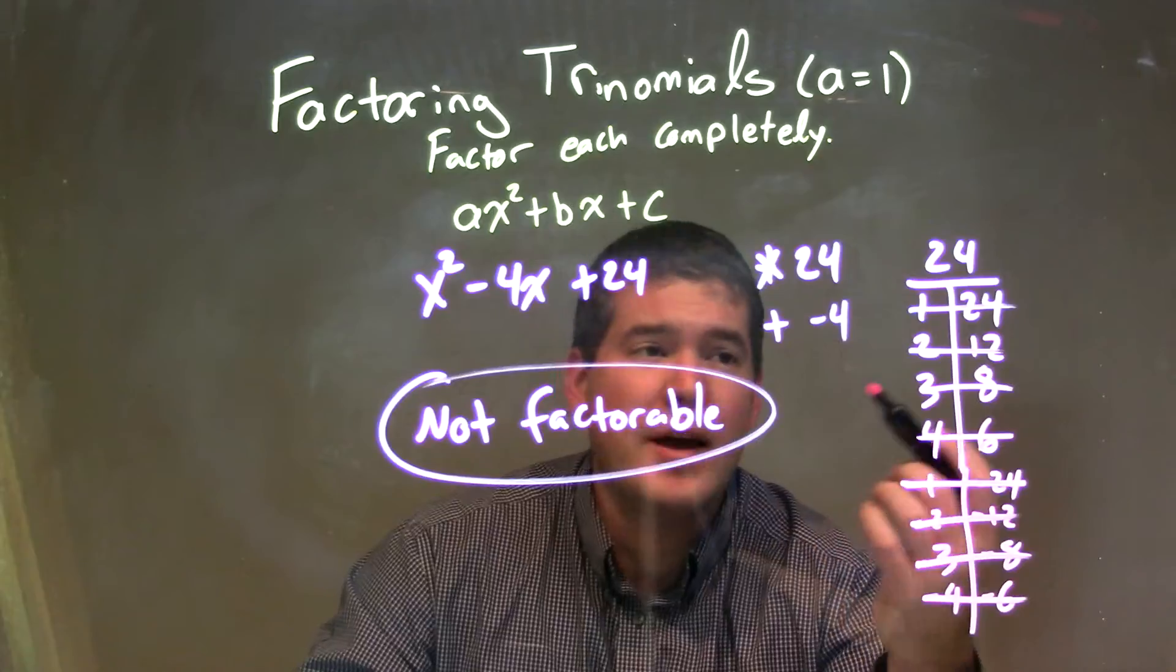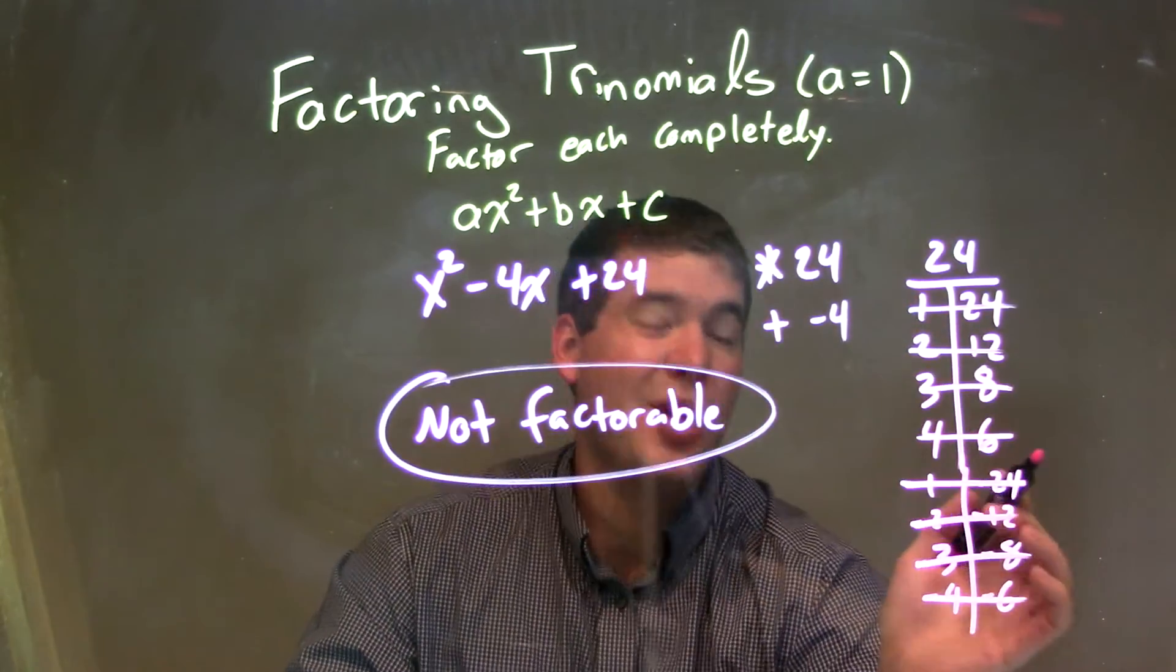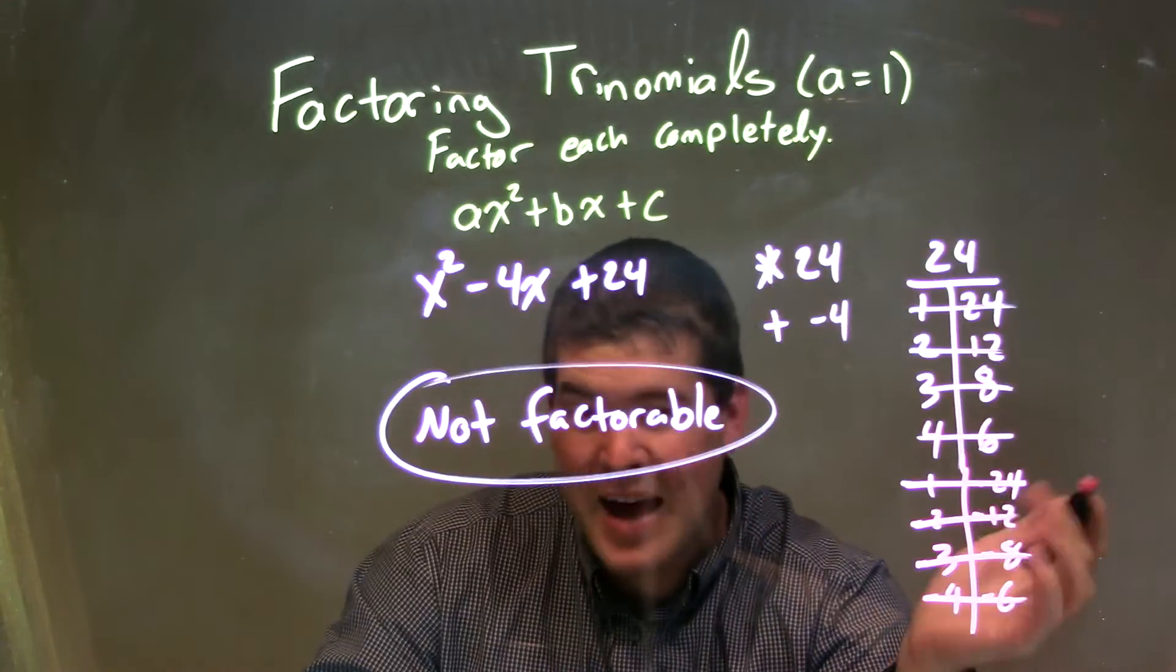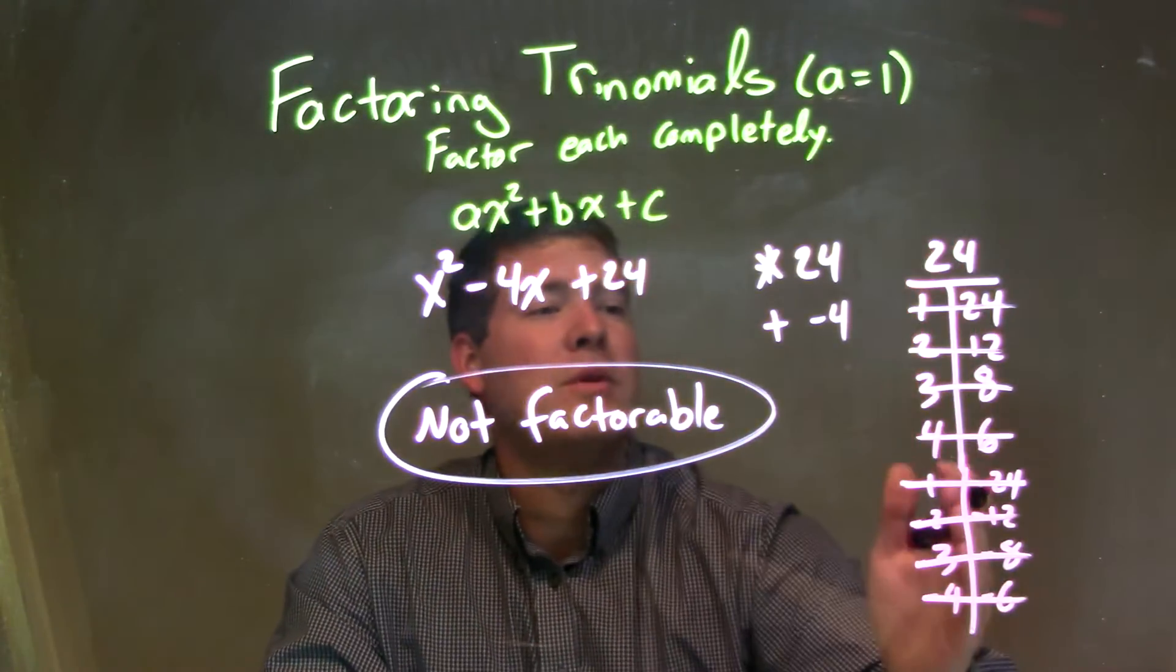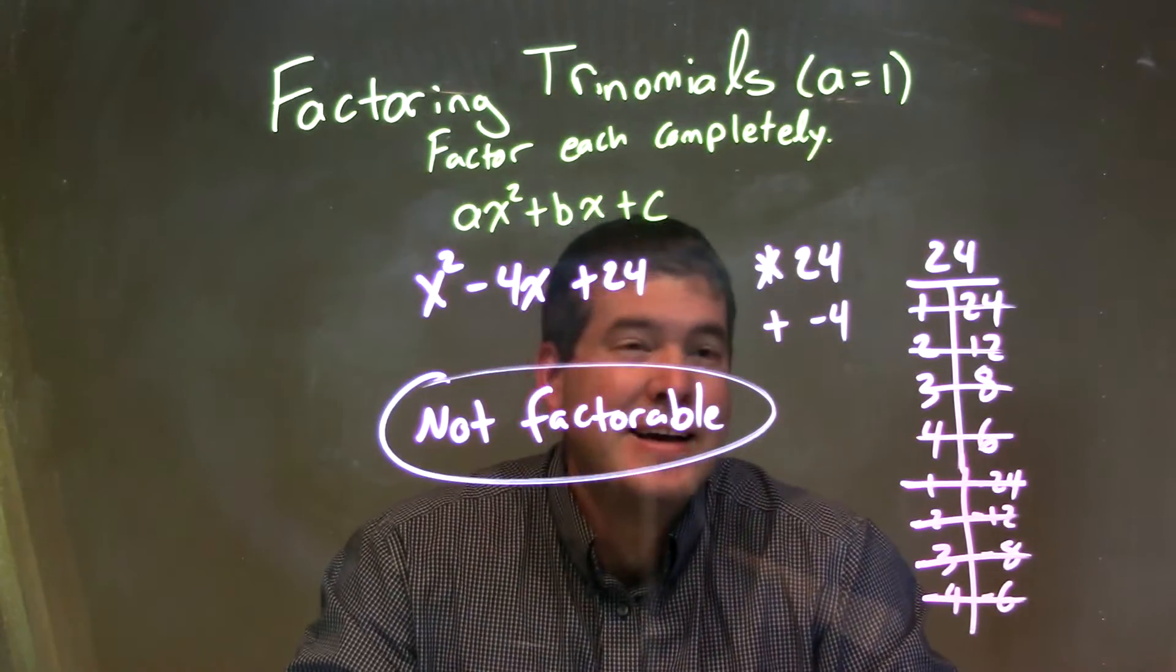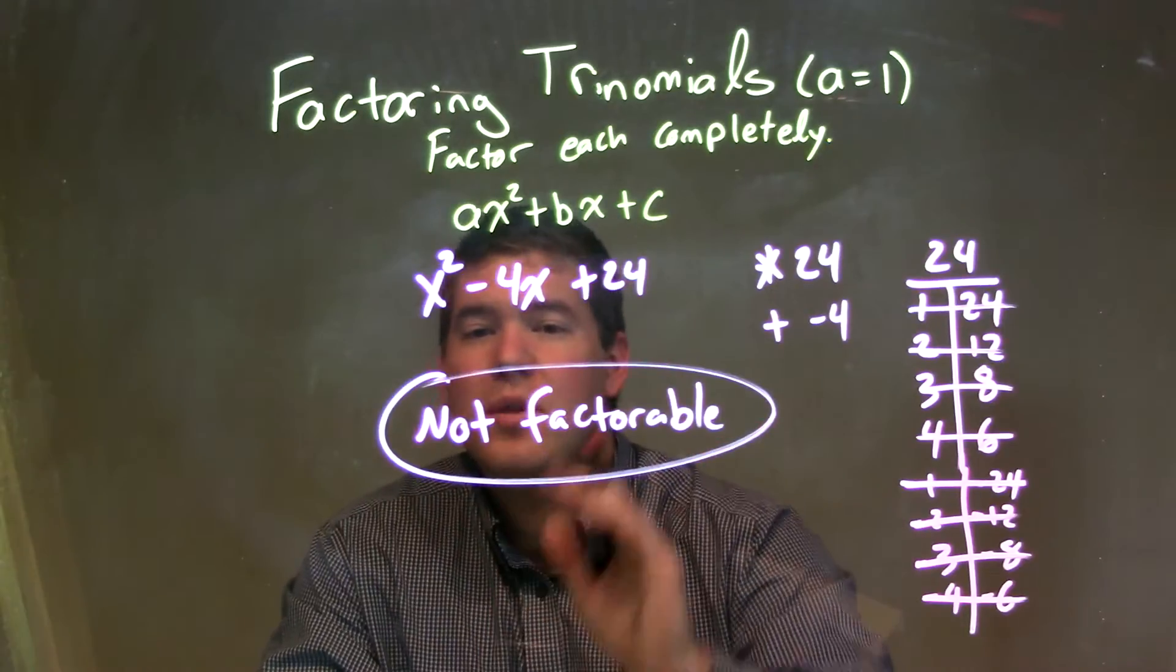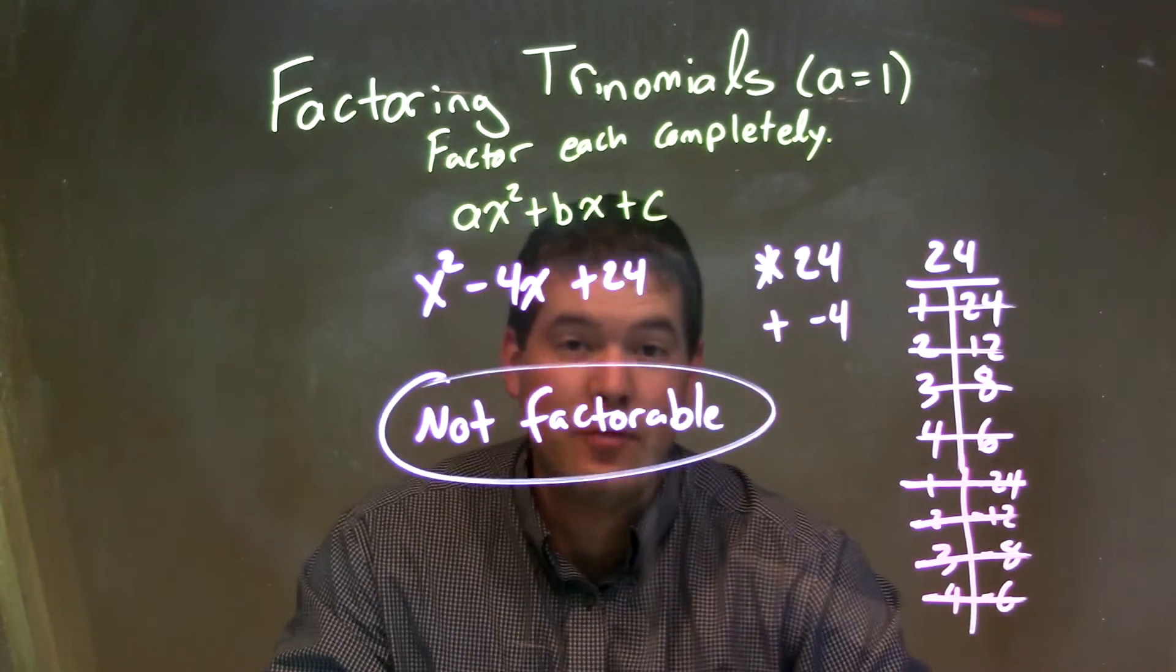Then I went through and said, do any of these two add up to be negative 4? And all the positive ones, no. The negative ones ended up not adding to negative 4. So out of all the possibilities of two numbers that multiply to be 24, none of them added to be a negative 4. And so we can then conclude that this problem is not factorable.